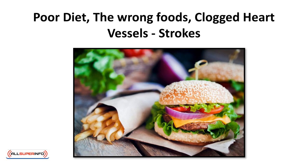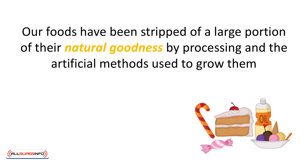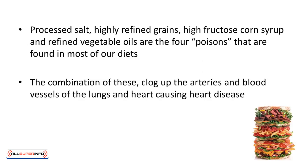Poor diet — the wrong foods — leads to clogged heart vessels and strokes. There is absolutely no doubt that having a poor diet, or a diet deficient in many vital nutrients, is a leading contributor to the extremely high incidences of heart disease today. Our foods have been stripped of much of their natural goodness by processing and artificial growing methods. Processed salt, highly refined grains, high fructose corn syrup, and refined vegetable oils are the four poisons found in most of our diets. The combination of these clogs up the arteries and blood vessels of the lungs and heart, causing heart disease.